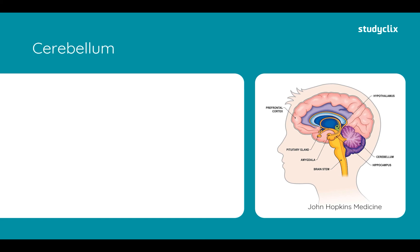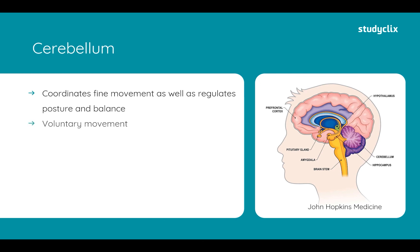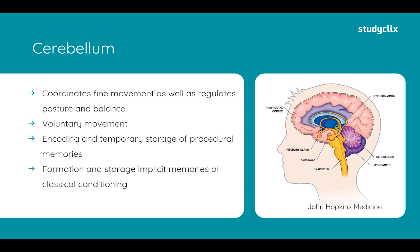Moving on to the last area of the brain, the cerebellum — visible here in the diagram. Its main role is to coordinate fine movement and regulate posture and balance, and it plays a huge role in voluntary movement. In terms of memory, it encodes and temporarily stores information relating to procedural memories before transferring them to the cerebral cortex. It also plays a big role in the formation and storage of implicit memories of classical conditioning, including fear responses, and contributes to spatial learning alongside the hippocampus.